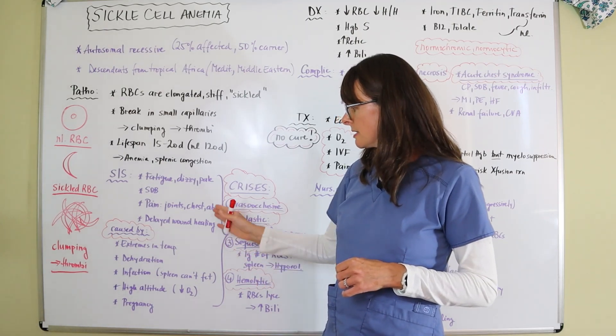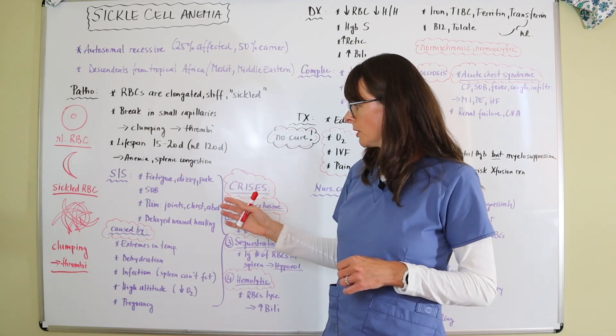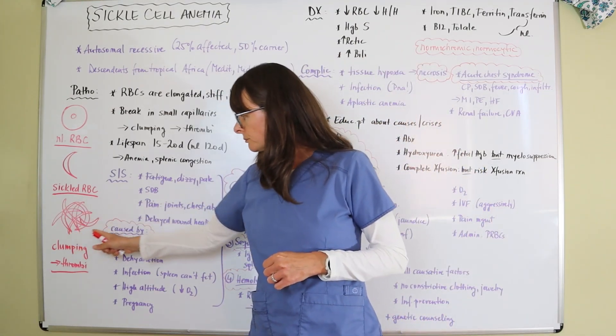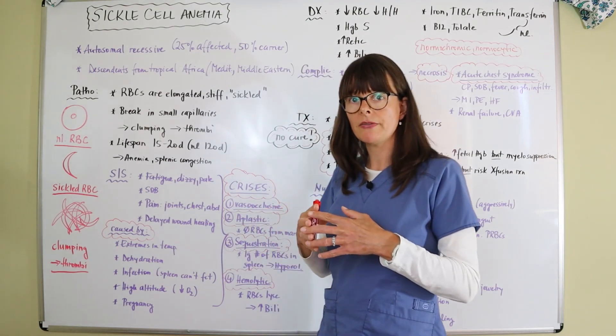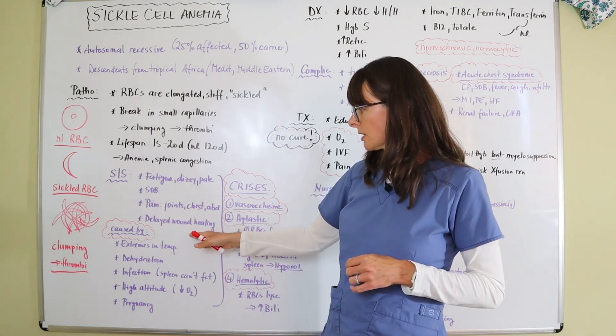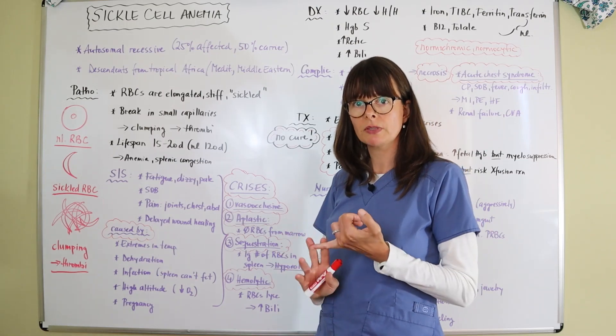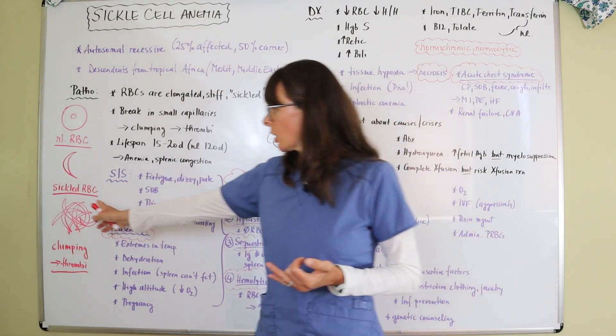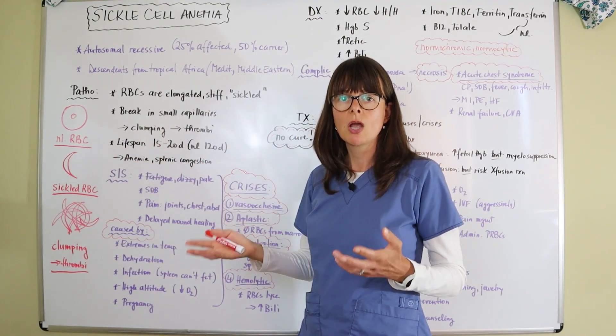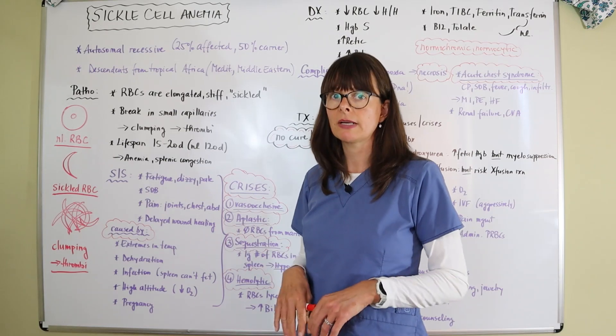But in sickle cell disease, there's more symptoms that apply to this particular disorder, which is pain in the joints, chest, and abdomen, because when these clumped sickle cells stick together, they can cause this significant amount of pain. Also for the extremities, there can be delayed wound healing because first of all, the patient is anemic. Then if we have a clump of the sickle cell somewhere in the blood vessel, that distal part is not going to get perfused and lack that oxygen being carried to the site of the wound, and then we have delayed wound healing.